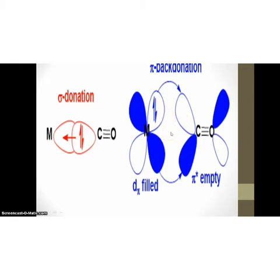This sigma donation and pi back donation together are known by a name, that is synergic effect. The metal to ligand bond creates a synergic effect that affects the strengthening of metal and carbon bond.